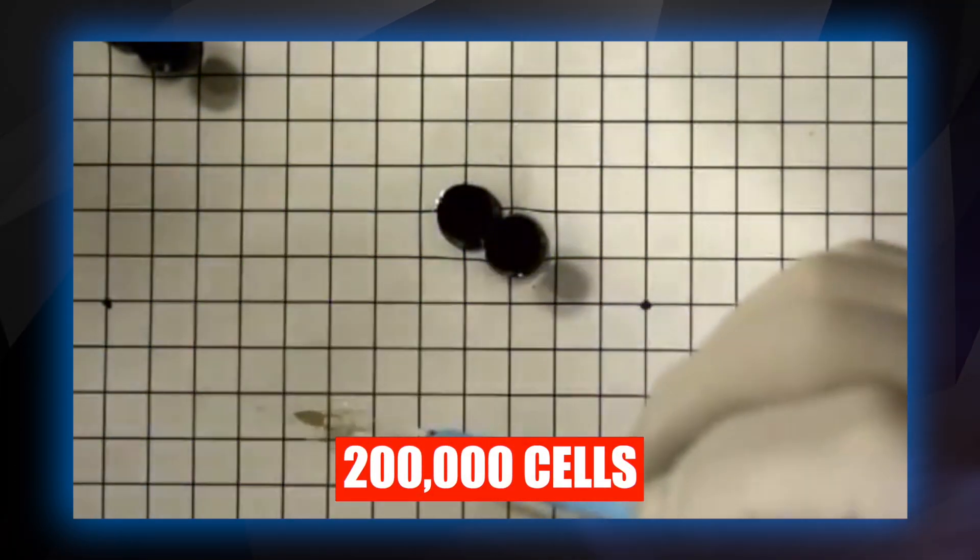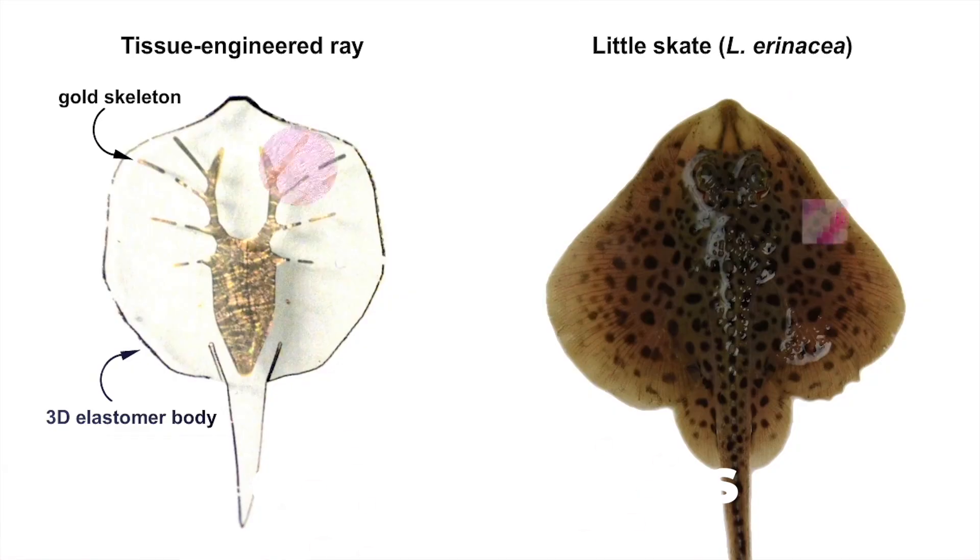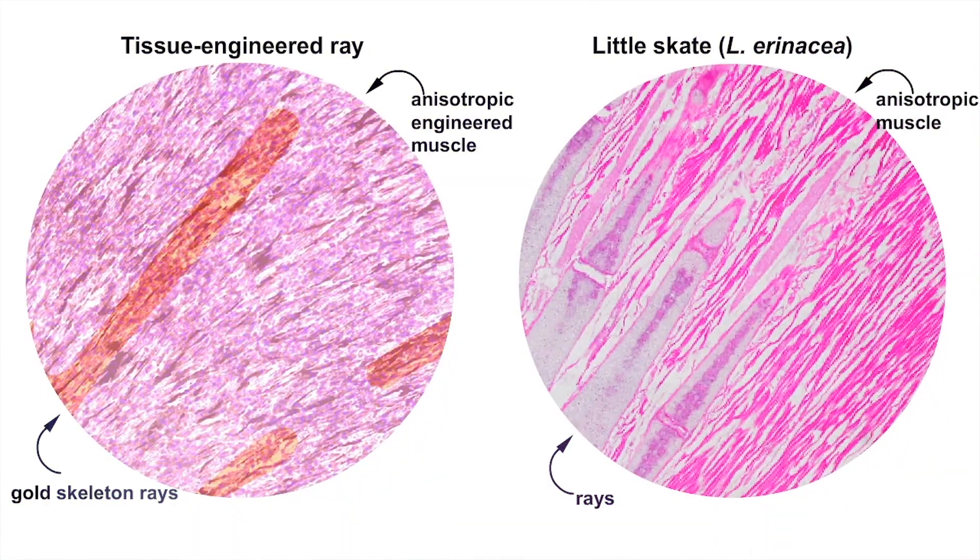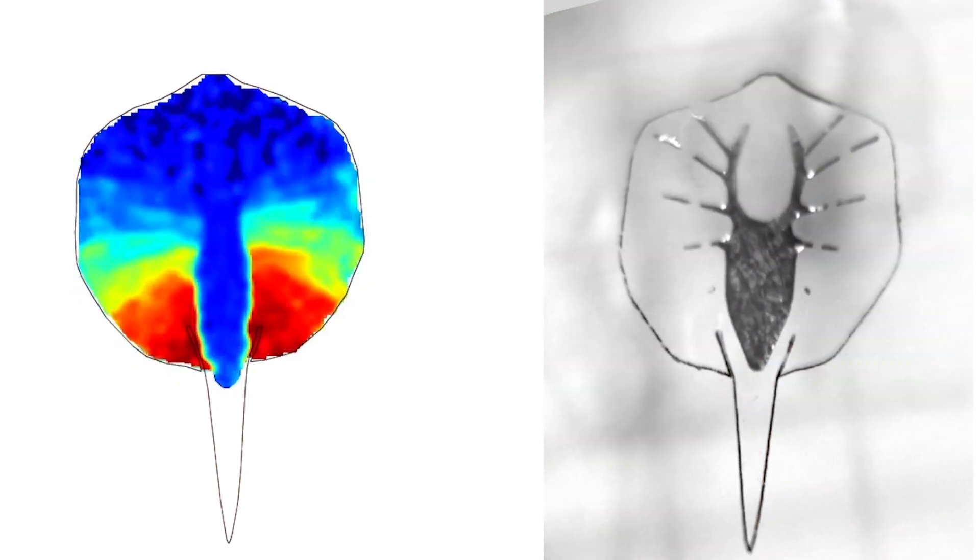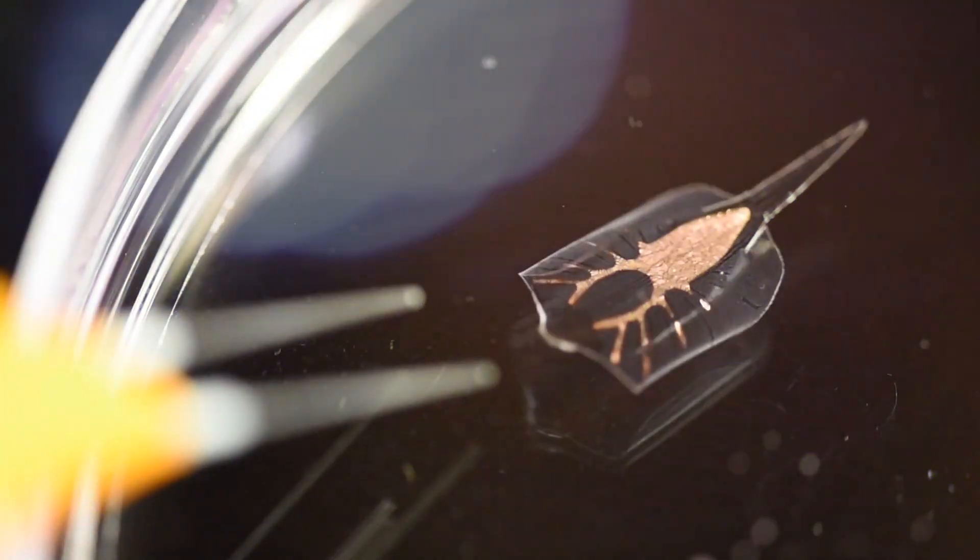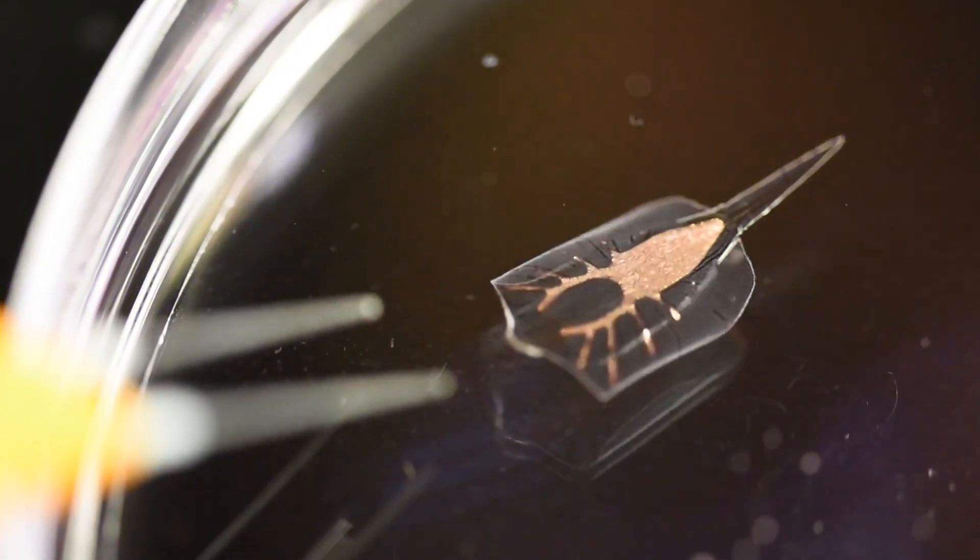More than 200,000 cells, called cardiomyocytes, derived from rat hearts, are woven throughout. Light-sensitive versions of these cells line the top of the stingray, and their movement is controlled by changing the frequency and pulse of light directed at it.